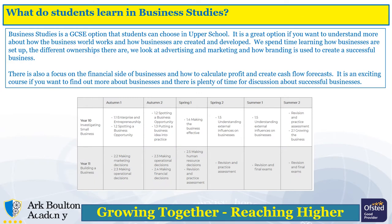GCSE Business Studies is an option for upper school students. It's a two-year course and involves studying how businesses are set up, financed and developed. It's a great option to take if you want to understand more about how the business world works and how businesses are created and developed. You can read more information about it on the current slide and see roughly what we cover in year 10 and year 11.